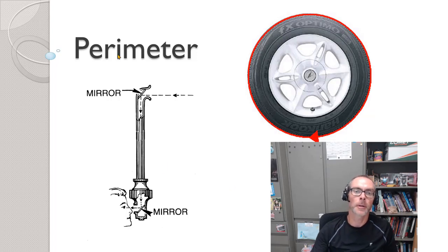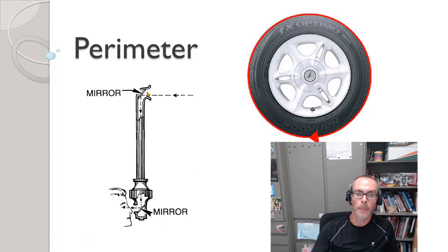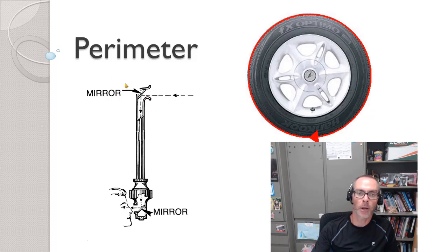Now if you look at the word perimeter, it's really two words: peri and meter. Peri is a word that shows up in other places. One place where you may have seen the prefix peri is a periscope — one of those mirrors in a tube that allows you to look out of a submarine. It's called a periscope because you can look all the way around. Peri in general means around.